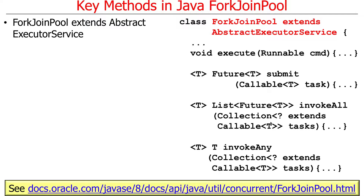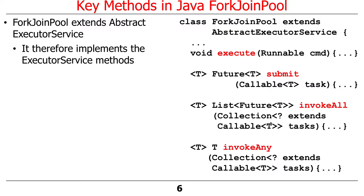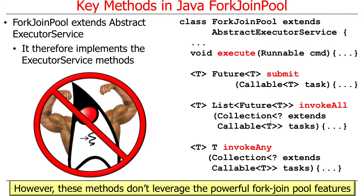ForkJoin pool extends AbstractExecutorService, which provides some reusable elements leveraged by other thread pools, like the ThreadPoolExecutor, ScheduledThreadPoolExecutor, and the ForkJoin pool. Because it implements AbstractExecutorService, which in turn implements the ExecutorService interface, there's a bunch of methods used to execute Runnables and submit Callables. However, these particular methods don't actually leverage the powerful ForkJoin pool features—it's just a way to run Runnables and Callables in a ForkJoin pool.